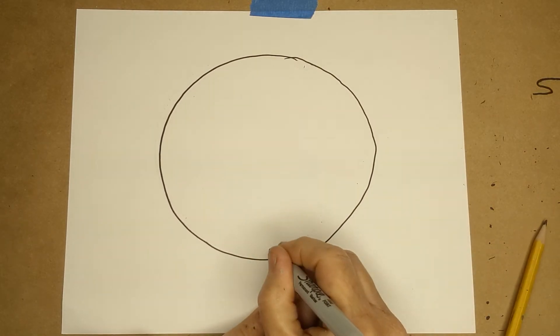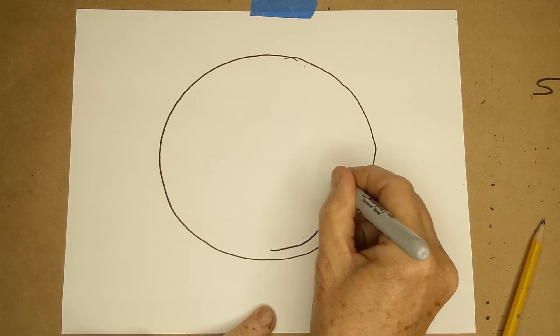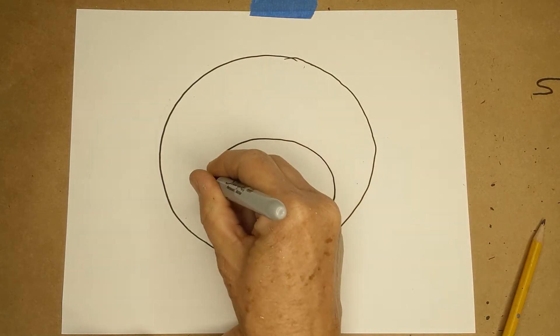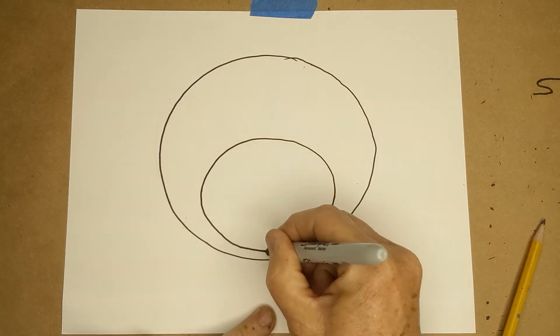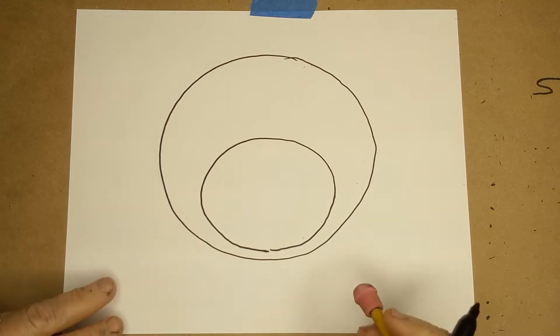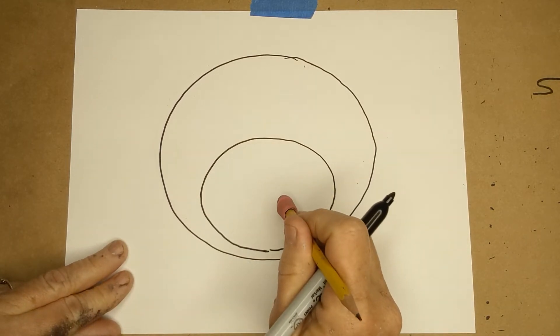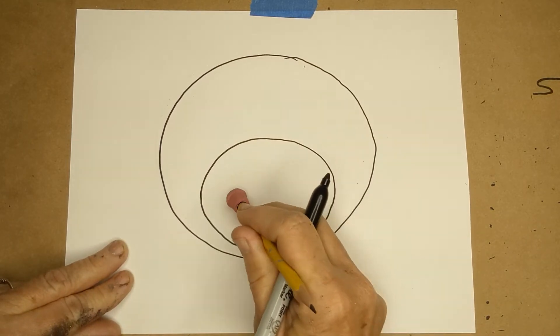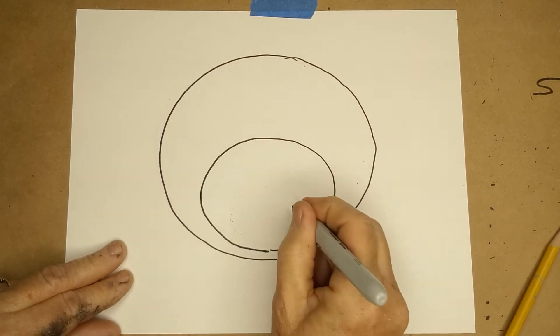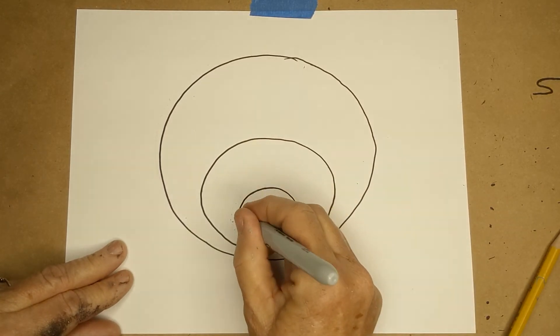This circle will actually be his head because he's gonna look straight at you. And then we're gonna do another one near the bottom, a nice big circle again, and this is his snout.